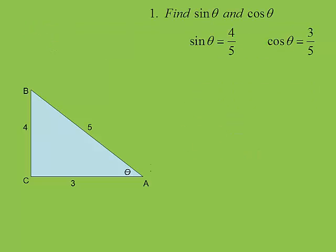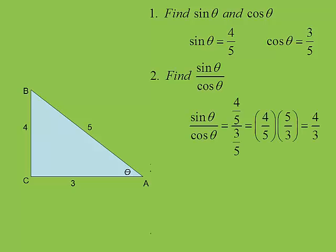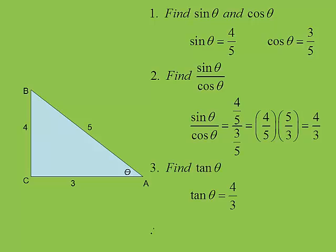Sine theta is opposite over hypotenuse, so in this case that will be 4/5. Cosine theta is adjacent over hypotenuse, so that will be 3/5. Now I want to find sine divided by cosine: 4/5 divided by 3/5. Multiply by the reciprocal of the denominator — the fives cancel — and we get 4/3 for sine divided by cosine. Going back to the triangle, tangent is opposite over adjacent, which gives us 4/3. And lo and behold, sine divided by cosine is exactly the same as tangent. That is the tangent identity.